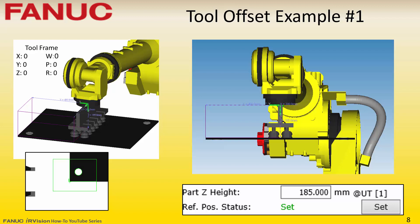In this first tool offset example, using a zero tool frame and a part that is positioned 185 millimeters away from the faceplate, the part Z height would be positive 185 millimeters. The part Z height is positive because the Z axis points out of the faceplate.